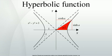The hyperbolic functions take real values for a real argument called a hyperbolic angle. The size of a hyperbolic angle is the area of its hyperbolic sector.